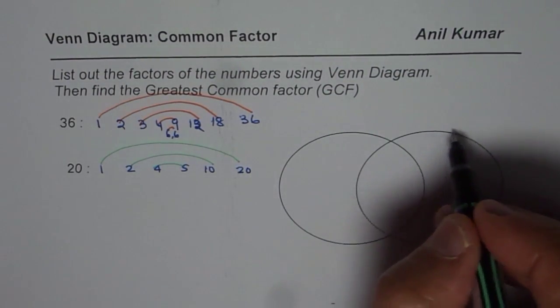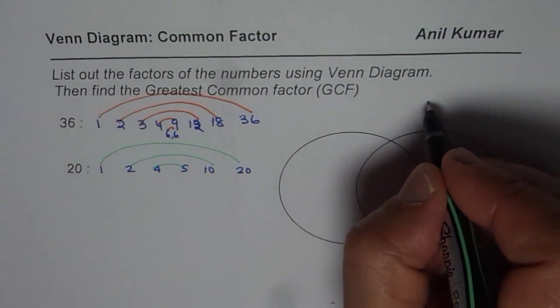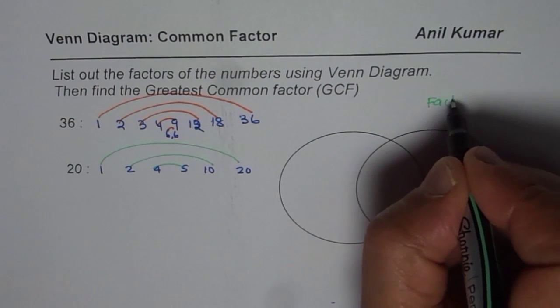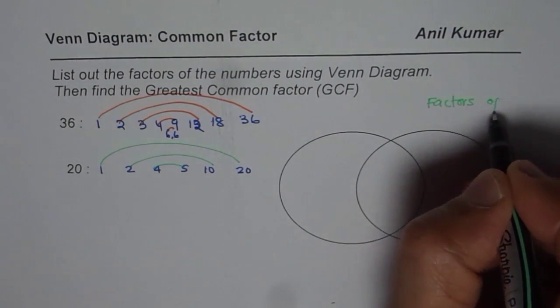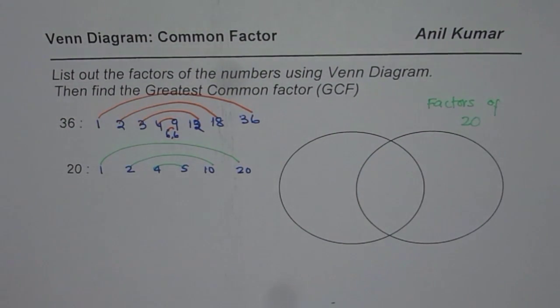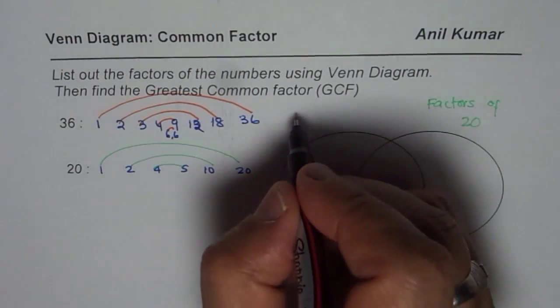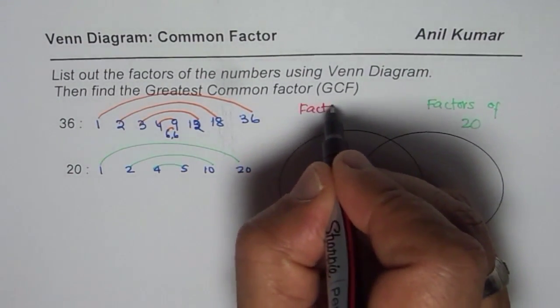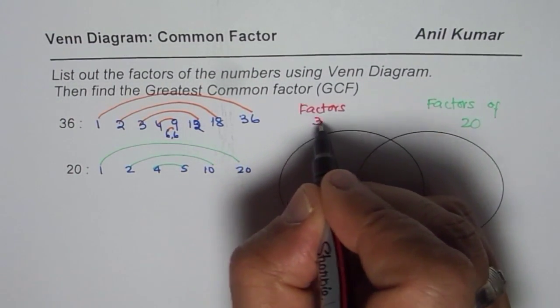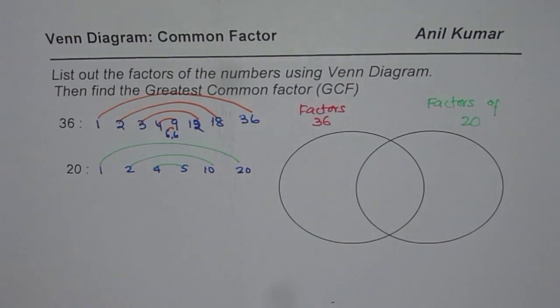Now let us say this circle represent factors of 20. And we will consider the first circle as factors of 36. So this is factors of 36. Out of these factors, which ones are common?